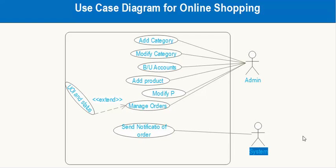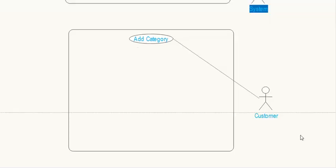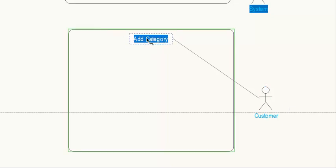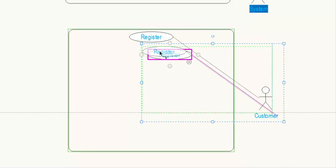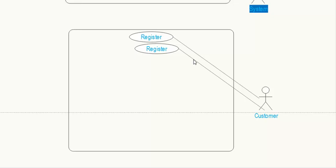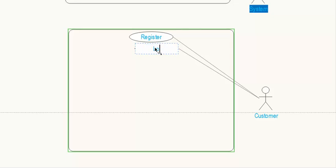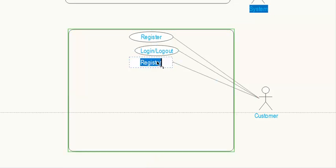Now let's move to the customer section. The customer is another actor. What can the customer do? First, the customer can register on the website. Also, the customer can log in and log out from the system, and the customer can update their account.